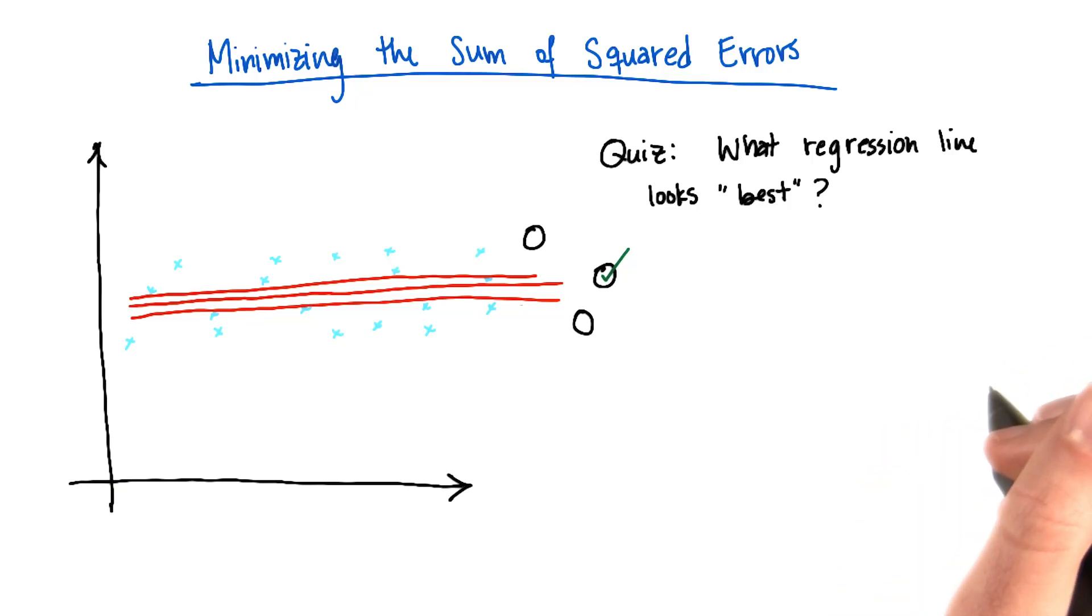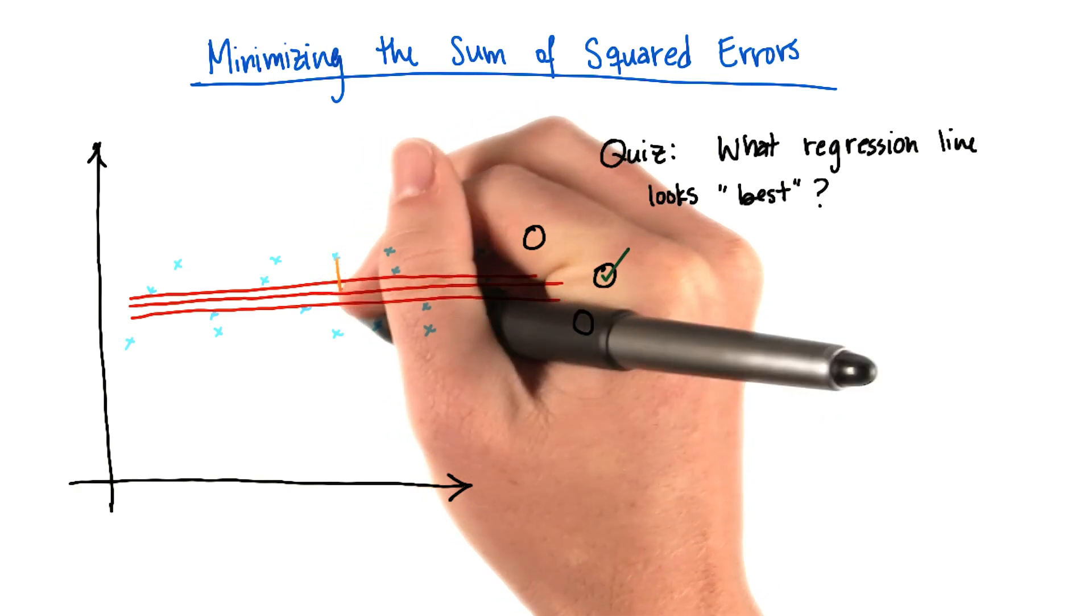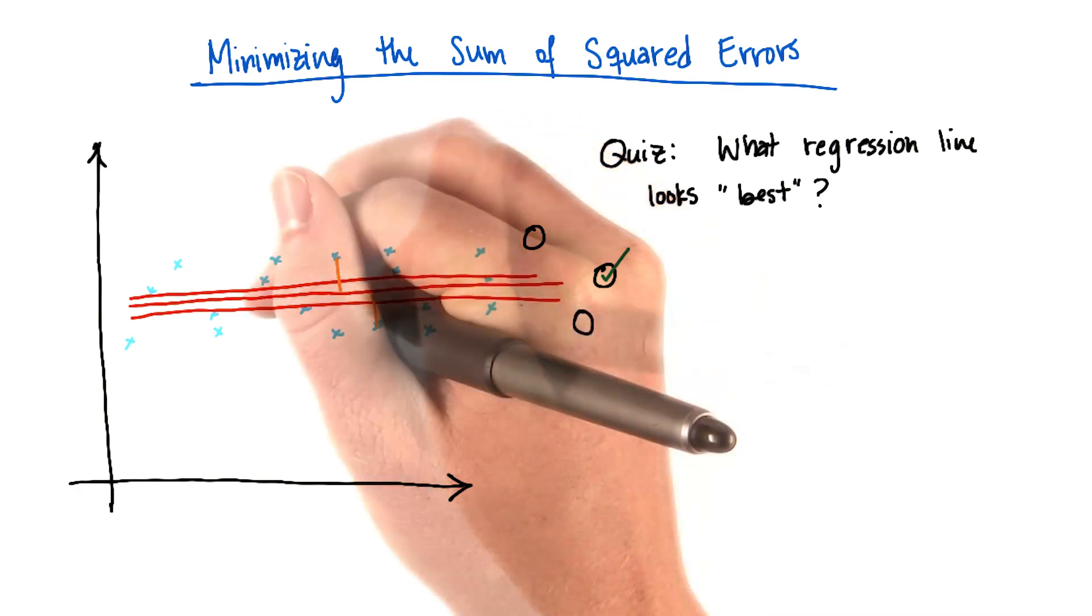Now that you've thought about that, let me show you why this matters. Let me take the example of the middle line first. My errors are going to look something like this. I'm sketching them in right now.